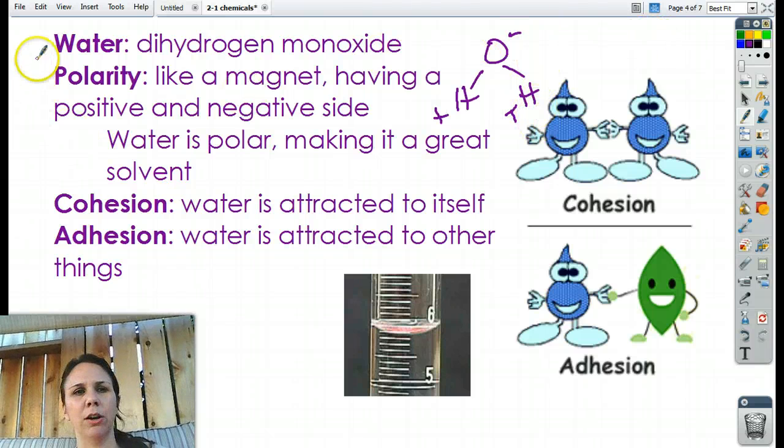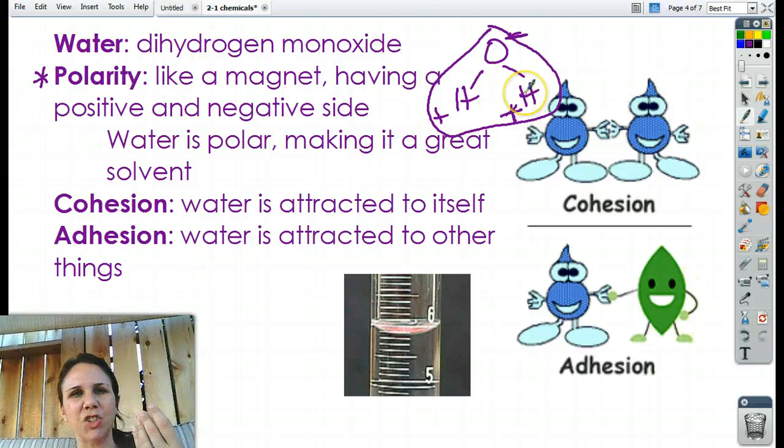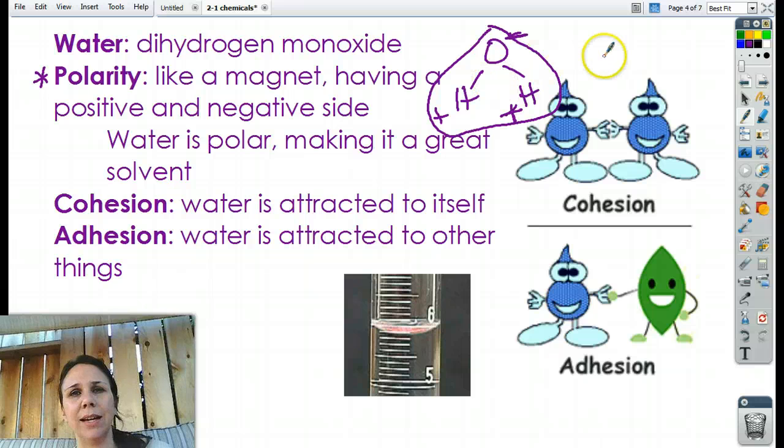We call that polarity. So, that's this thing right here. Like a magnet, having a positive and negative side. So, water is polar because of the fact that it's slightly negative on one side of it and slightly positive on the other side of it. That makes it sticky. Not sticky like tar, but sticky that it likes to stick to other things that are positive and negative.